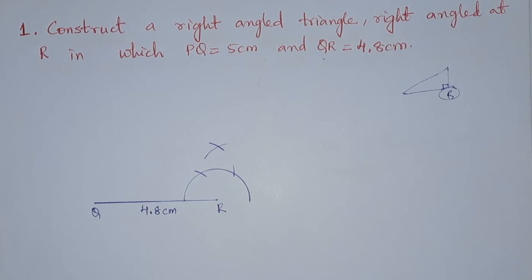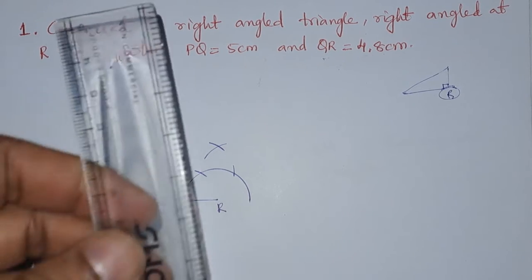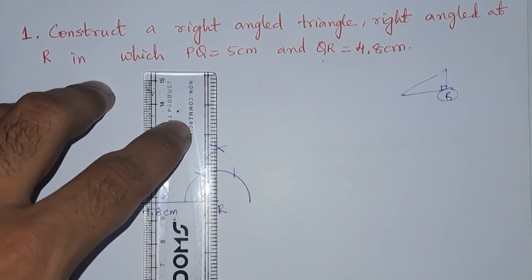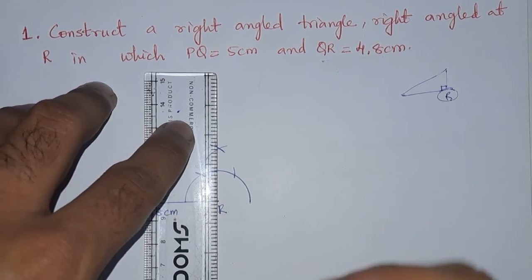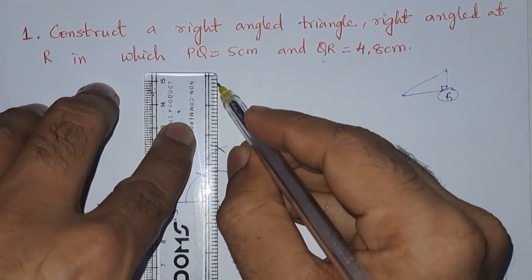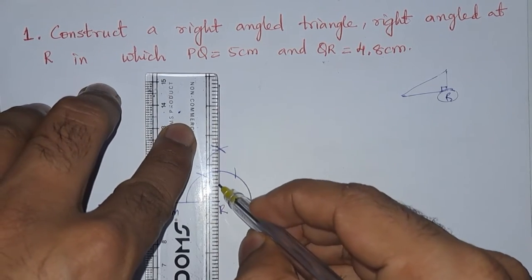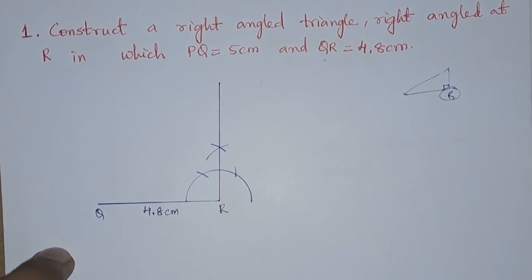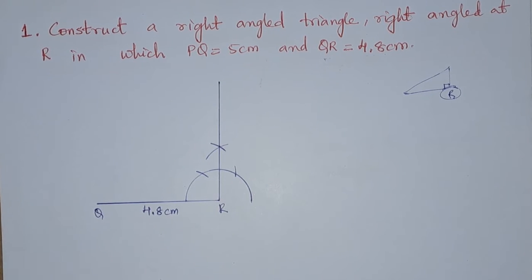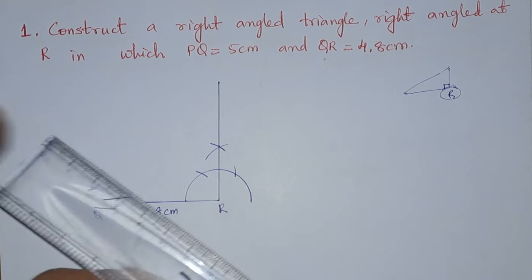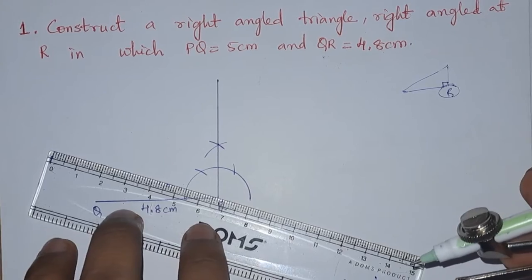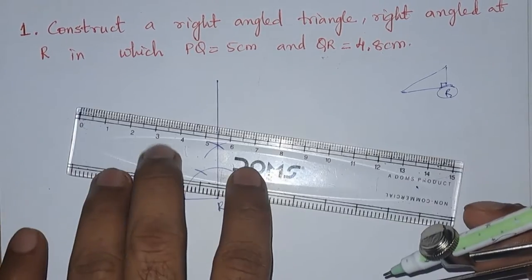Now let us join these two points — point R and this point — so we get 90 degrees. Now they told us to take PQ as 5 centimeter.